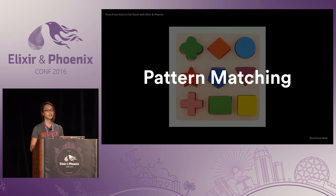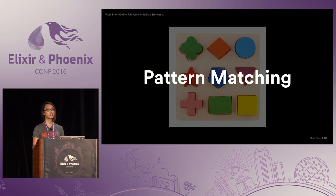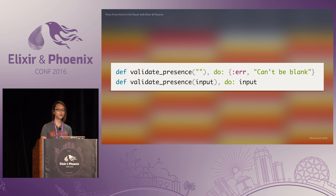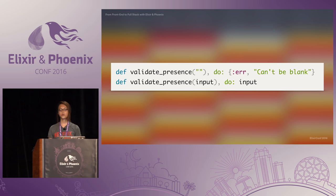When I was first learning Elixir, pattern matching was one of the hardest concepts for me to grasp because I had never encountered it before. But once you get it, it's really intuitive. If you come from a JavaScript background, it's kind of like destructuring, but with type checking and value matching. With pattern matching, you almost never need to use conditionals. Instead, you can define different function heads to handle different kinds of data. Pattern matching forces you to think about your data first: what are the possible values this function will receive, and how do I want to handle them?